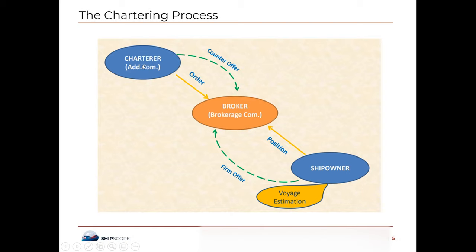The charterer is the one who floats an inquiry, which goes to the broker. When the broker sees an opportunity, he connects it to the ship owner, who then sends a firm offer. That is how the negotiation starts between charterer and ship owner, where a counteroffer is offered. The order is from the charterer, the position is from the ship owner, voyage estimation is done on the ship owner's behalf, commission from charterer, and brokerage from the broker.